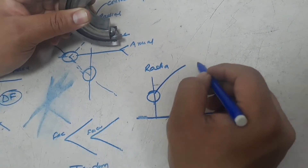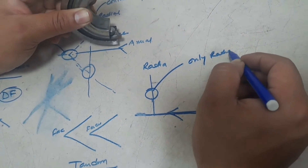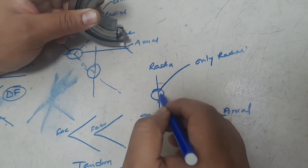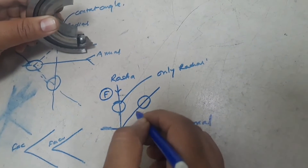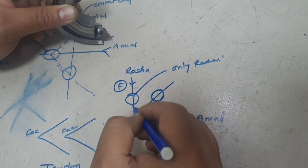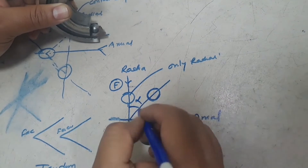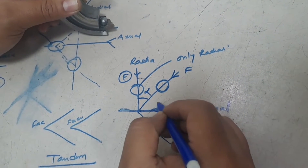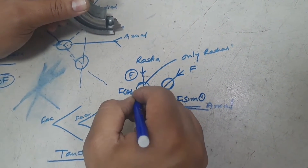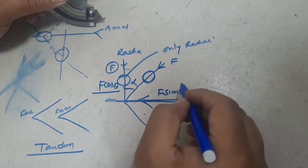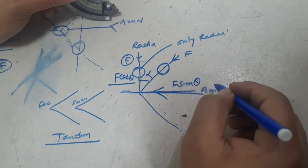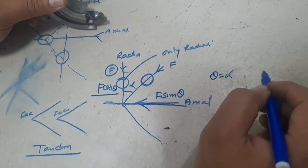A regular radial ball bearing takes only radial load. But in an angular contact bearing there is a contact angle, and due to that contact angle the bearing is able to take both radial and axial loads. The contact angle determines how much axial or radial force the bearing will take. The radial force component is F·cosθ and the axial force component is F·sinθ.